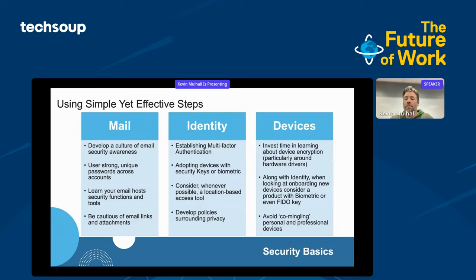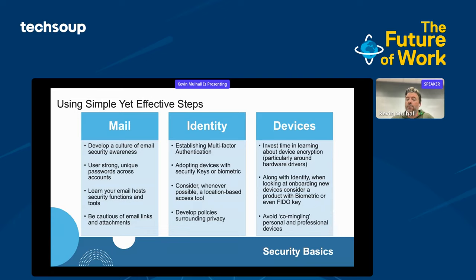For devices, invest time learning about device encryption. If somebody gains access to your device, how can you keep them out? Microsoft BitLocker is a great tool — it's part of the professional version of Windows. Macs have various tools as well, built on Unix security. When looking to onboard new devices, consider a product with a biometric reader or a FIDO2 key — FastID Online — which is very inexpensive, easy to set up, and gives your device an extra layer of security. Your ability to engage with endpoints like Microsoft 365 and other third-party applications can be controlled by a FIDO key.